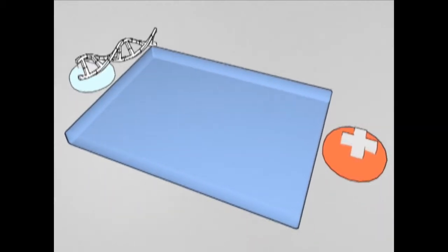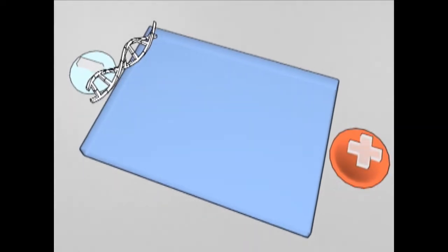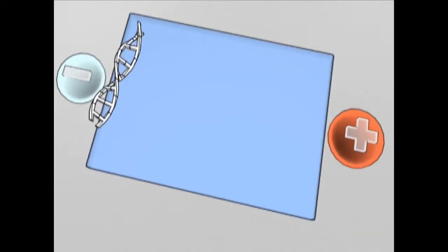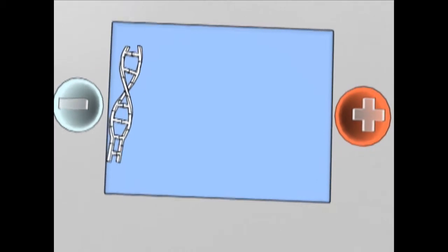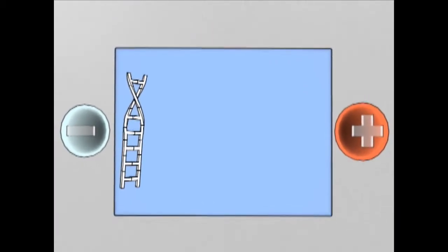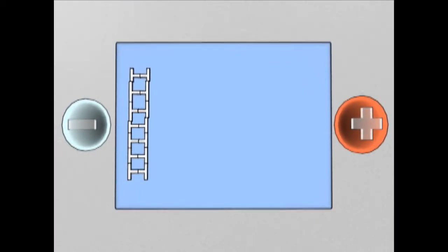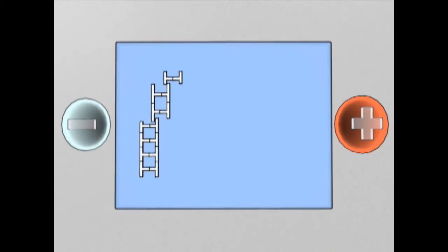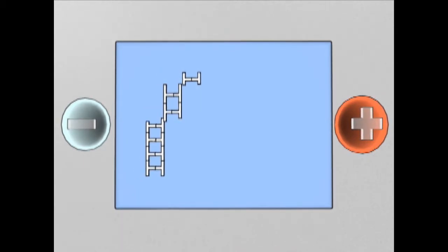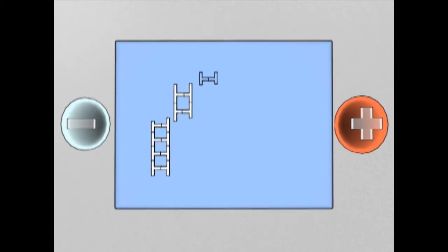DNA molecules have a strong negative charge, so if an electric field is applied to the tray, they will move towards the positive electrode. Agarose gels have microscopic pores, which act as a filter when molecules attempt to move through them. Smaller molecules will move through the gel more quickly than larger molecules.